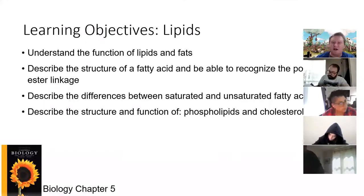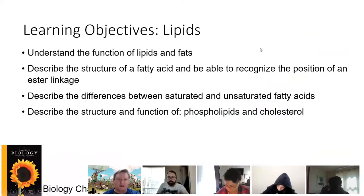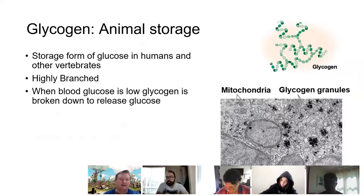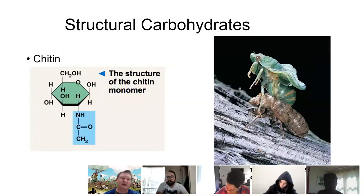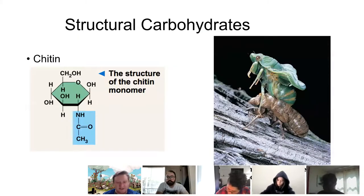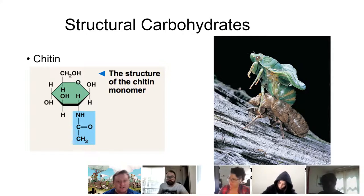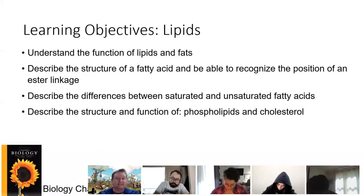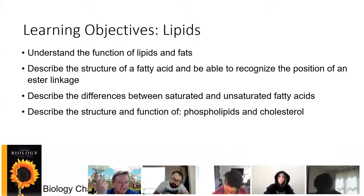So yesterday we got through our carbohydrate discussion. We talked about energy storage carbohydrates, and we talked about structural carbohydrates, the most important ones being cellulose and chitin to a lesser extent. Now we're moving on to a basic discussion of lipids, which are the fats and the oils.